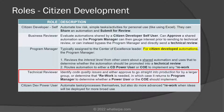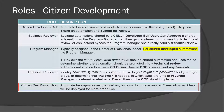The technical reviewer can identify code quality issues and either approve it to go straight into production for a larger group, or determine that rework might be needed, in which case it returns to the program manager to determine whether a power user or the COE should implement it. Finally, the citizen developer power user can not only automate tasks and processes themselves, but can also do more advanced rework when ideas created by citizen developer self users are going to be deployed for broader use by the whole team.